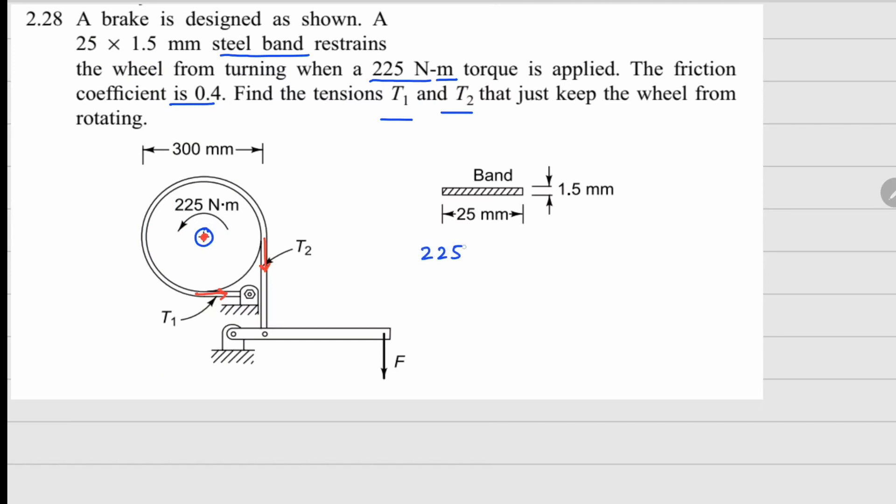225 N·m equals (T2 - T1) times the radius, because T2 gives clockwise moment and T1 gives anticlockwise moment. The diameter is 300 mm, so from the center the radius is 150 mm.